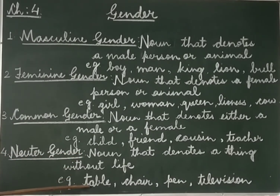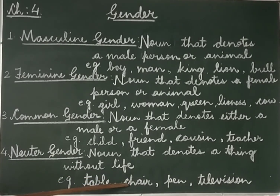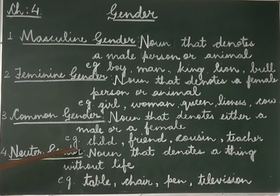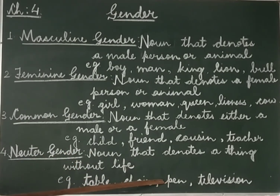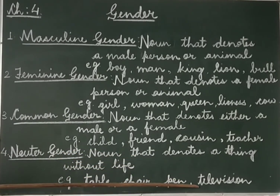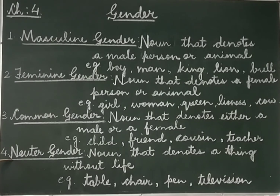table — table is a non-living thing and it does not have life, therefore it is neuter gender. Chair — this again is a non-living thing, so it is neuter gender. Pen is also a non-living thing, so it is neuter gender. And television is also a non-living thing, without life, so it is also neuter gender.